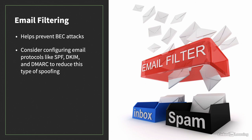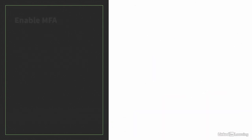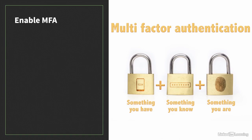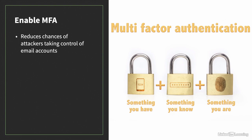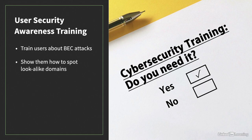Next, enable multi-factor authentication, or MFA, especially on email accounts. This will significantly reduce the chances of an attacker taking control of an email account with just a username and password. Once enabled, never disable MFA. User security awareness training is another important protection against BEC attacks. Train users about these attacks and that they should be suspicious of urgent-sounding or unusual emails that request transferring funds. Show them how to spot lookalike domains. Teach them to confirm financial transaction requests out of band — meaning through some method other than email, such as calling the person or meeting with them directly.